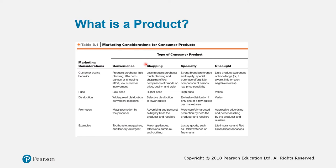Shopping products require less frequent purchases, involve planning and shopping effort, and require comparison of brands on price, quality, and style. They are normally higher priced than convenience products. In terms of distribution, they are not available everywhere but in selective, fewer outlets — typically in shopping malls and departmental stores like Parkson. Examples include major appliances, televisions, furniture, and clothing.